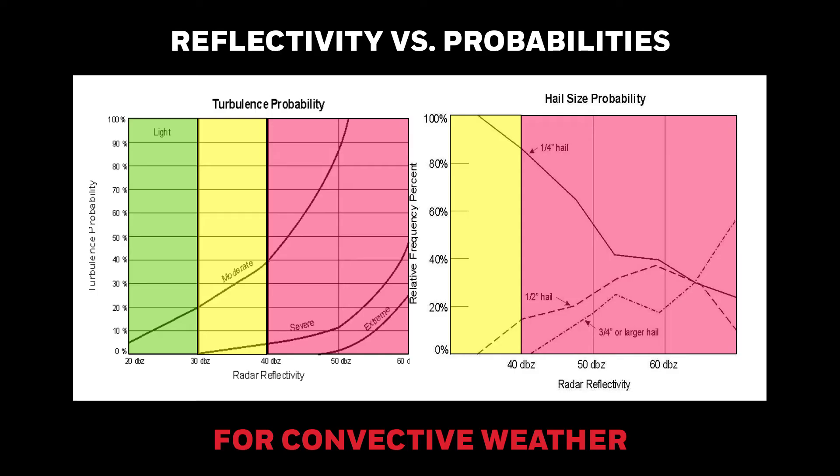First, why do we look at the colors? From studies, we know that with higher reflectivity comes a higher probability of turbulence and increased hail size. Higher reflectivities come from large raindrops, water-covered hail, and melting hail.